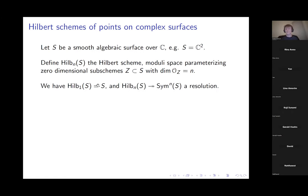Concretely, Hilb_1(S) is just the space of all points in S. These things are always varieties, by very general results going back to Hilbert and Grothendieck. More generally, in the surface case Hilb_n(S) will be a resolution of the symmetric product — the quotient by the symmetric group of the n-th product of S.